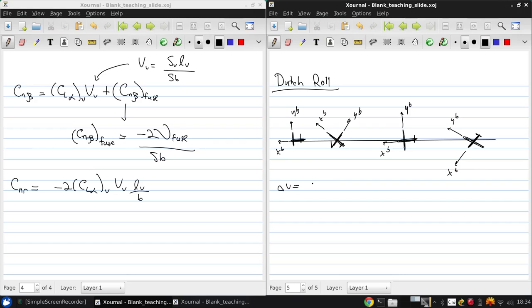We take Δv = -u₀Δψ, so we're neglecting any roll accelerations. And this yields the 2×2 system governing the Dutch Roll dynamics as [Δv̇, Δṙ] = [Yᵥ, Yᵣ - u₀; Nᵥ, Nᵣ][Δv, Δr].